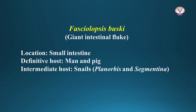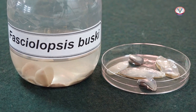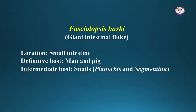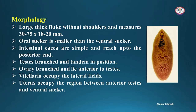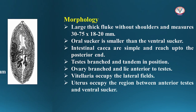Fasciolopsis buski, the giant intestinal fluke, is present in the small intestine of man and pig. The first intermediate host is snail Planorbis and Segmentina. These are large, thick flukes without shoulders. The oral sucker is smaller than the ventral sucker, and both are present in the anterior one-third of the body. The intestinal caeca are simple and reach up to the posterior end. Testes are branched and tandem in position. The ovary is also branched and lies anterior to the testes. Vitelline glands occupy the lateral fields.